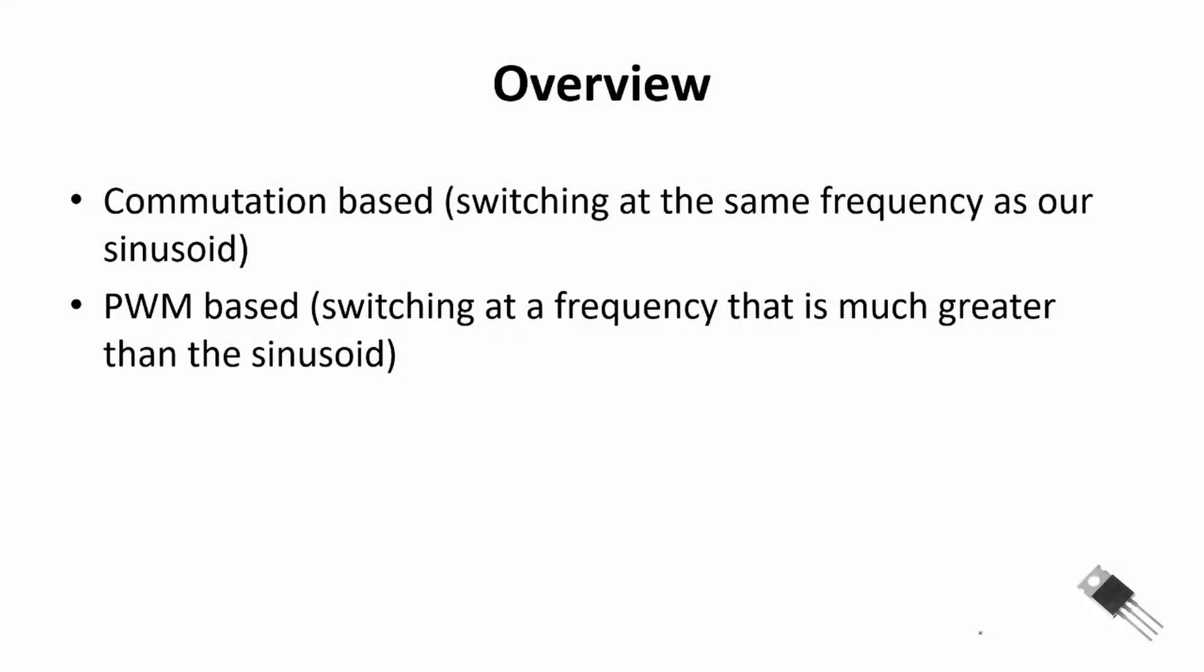In this video we are going to look at two types of DC to AC inverters. The first class of inverters is called commutation based. In commutation based inverters, switching occurs at the same frequency as the sinusoid we are trying to create. The other class of inverters are PWM based. In PWM based inverters we switch at a frequency that is much greater than the sinusoid. The main reason is it can lower the total harmonic distortion of the waveform we produce.